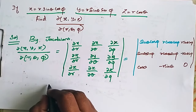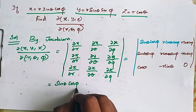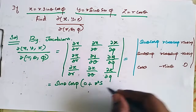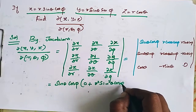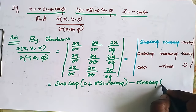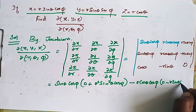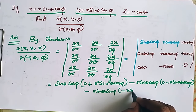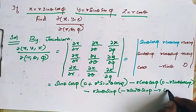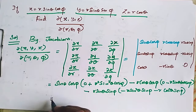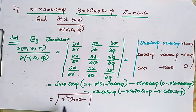So now we can simplify this. sin θ cos φ into 0 plus r² sin² θ cos φ, minus r cos θ cos φ into 0 minus r sin θ cos θ cos φ, then minus r sin θ sin φ into minus r sin² θ sin φ minus r cos² θ sin φ. Simplifying, we get r² sin θ.